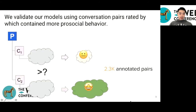To validate our proposed models, we need to know what types of conversations people find more prosocial in advance. We ask annotators to perform a task: given two conversations, select which one contains more prosocial behavior. We get 2,300 pairs as ground truth labels, and annotators attain a Krippendorff's alpha of 0.78 on 300 mutually labeled pairs, indicating high agreement.